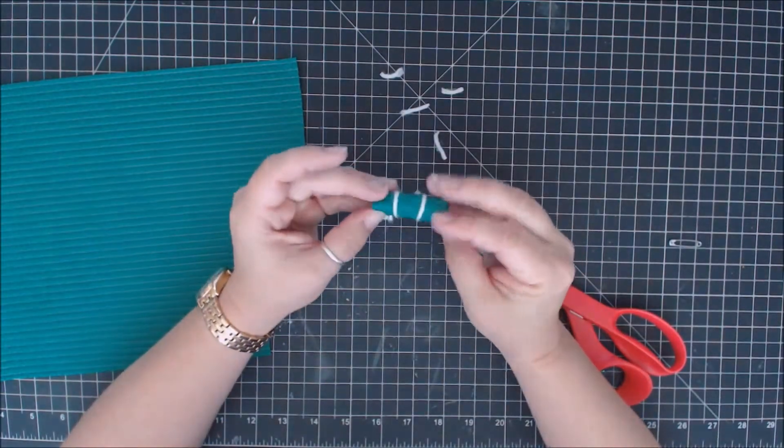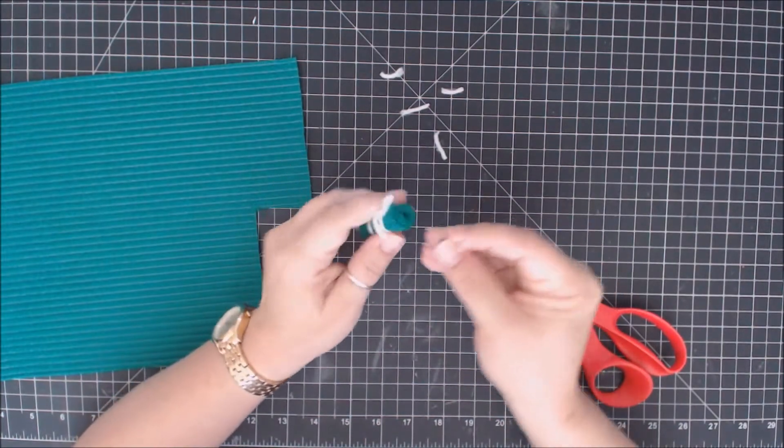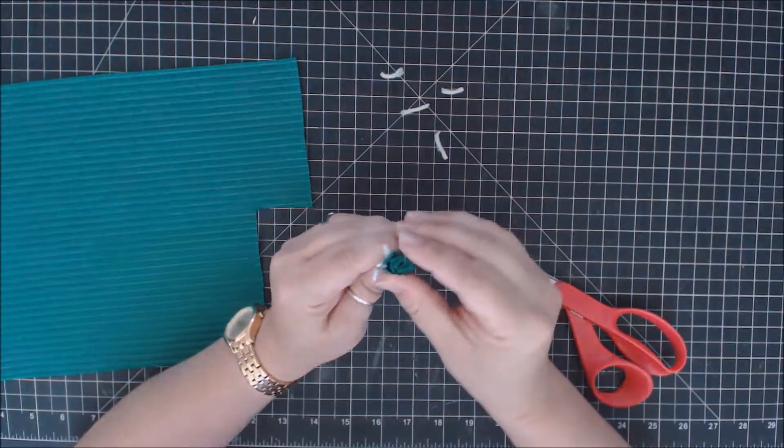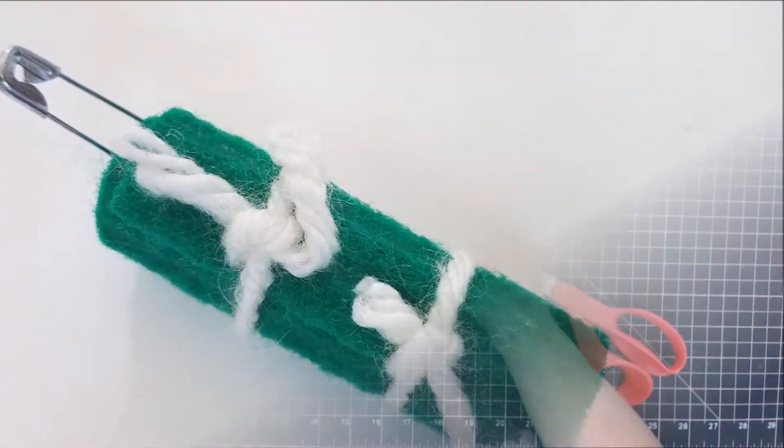So now you have your little sleeping bag rolled up. The last thing you need is just a little clip up here at the top, and you have your first cute little swap. Super simple.